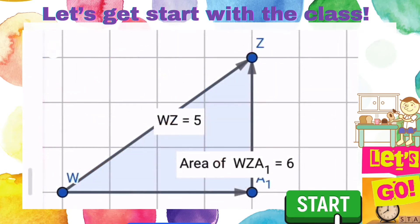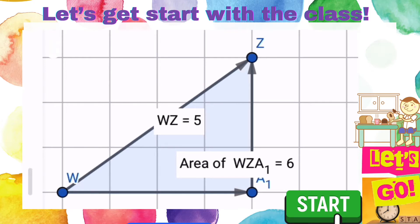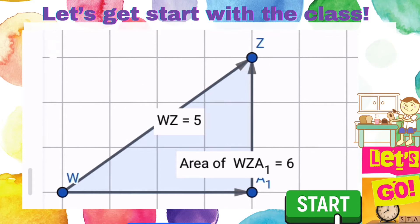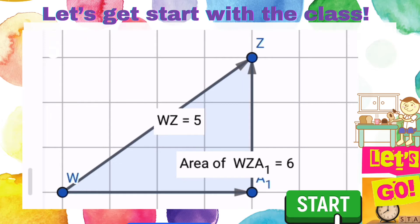So for example, let's have a look at this line WZ. The magnitude — we always use a modulus WZ. So the magnitude of vector WZ is equal to 5 units.